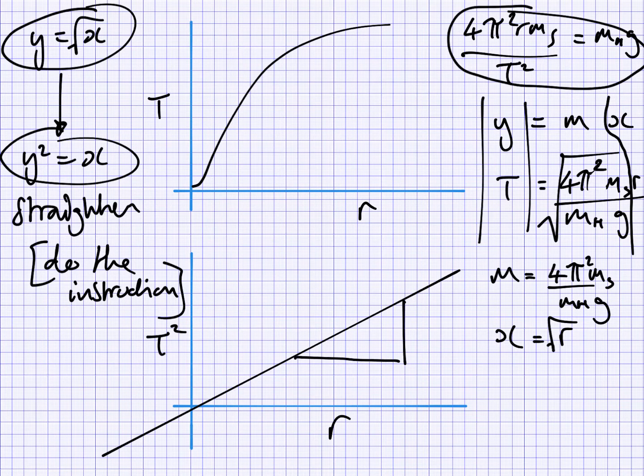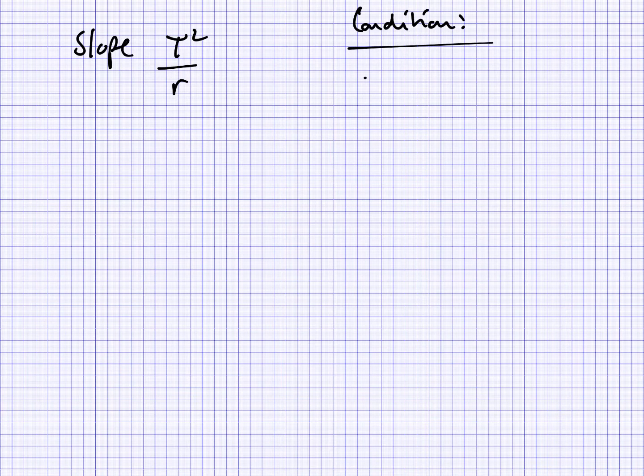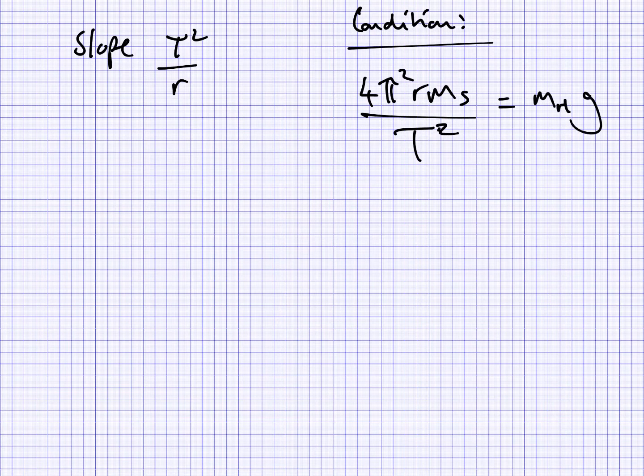And then, of course, I'm going to take the slope of this, and that slope we can then analyze. And that's going to look like this. So we've just said that the slope of this line is t² over r. And our condition that we've already set up is that 4π²r mass of the stopper over t² is equal to the mass hanging times g. And what we're going to do is use our slope calculation to solve for g.